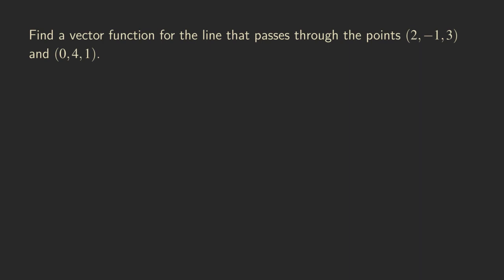Hello everyone, this is Wilson here. Today I want to talk about how to find a vector function for the line that's passing through two given points. The way that we find this is really just the same procedure as finding the parametric equation for a line in space.